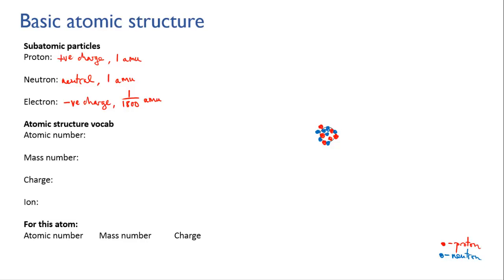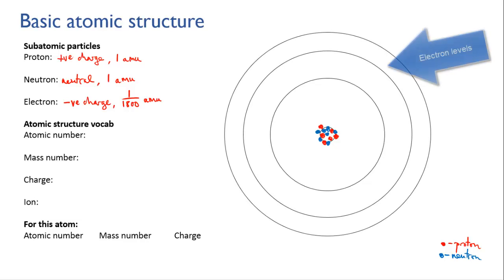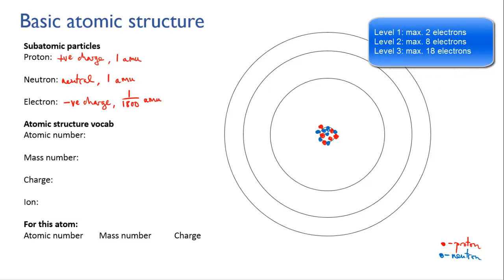The rest of the volume of the atom is mostly empty space, with electrons whizzing around it. Electrons are usually depicted orbiting the nucleus like planets, with some orbits close into the nucleus and others further out. The first orbit, or electron level, can hold a maximum of two electrons, and the next can hold eight.